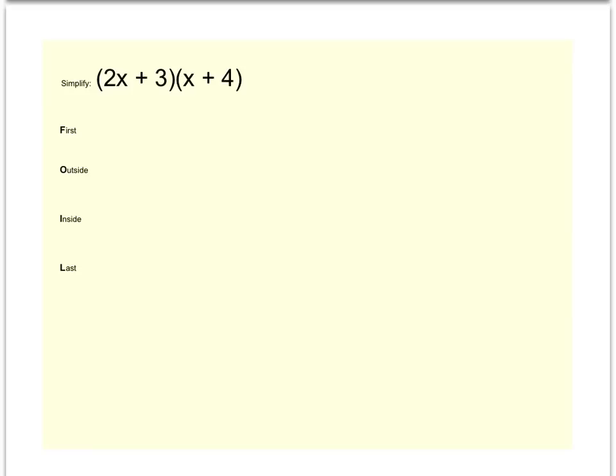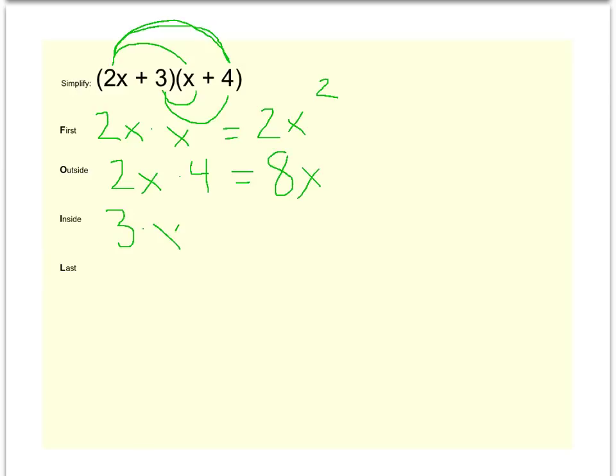Again, to simplify this, multiplying first, outside, inside, last. So you'll have 2x times x to give you 2x squared. The outsides will be the 2x times 4 to give you 8x. The insides will be 3 times x to give you 3x. And the last will be 3 times 4 to give you 12.